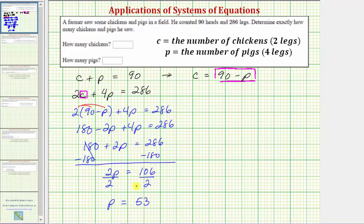So because we know p is the number of pigs, we now know the farmer saw 53 pigs.